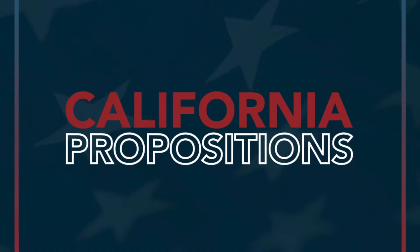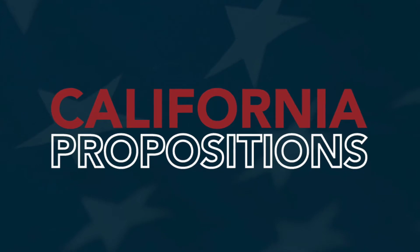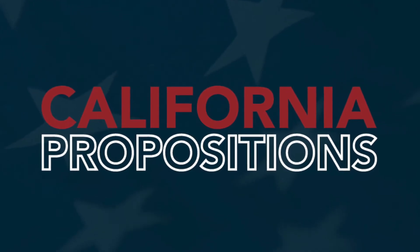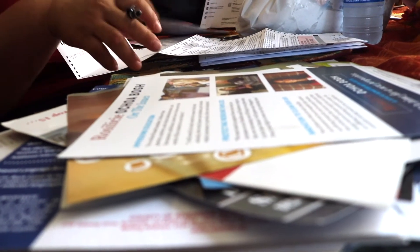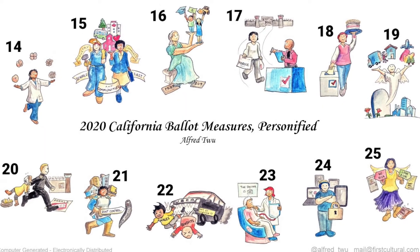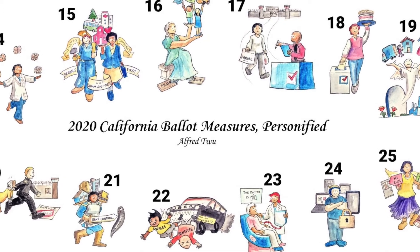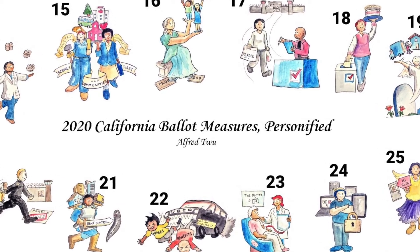In California, 12 statewide ballot propositions are on the ballot for the election of 2020. Here's what they are. California voters will decide on 12 statewide propositions on November 3rd. Measures on the ballot are from politically powerful interest groups or lawmakers and cover a variety of topics, including property taxes, criminal justice, and workplace regulations.